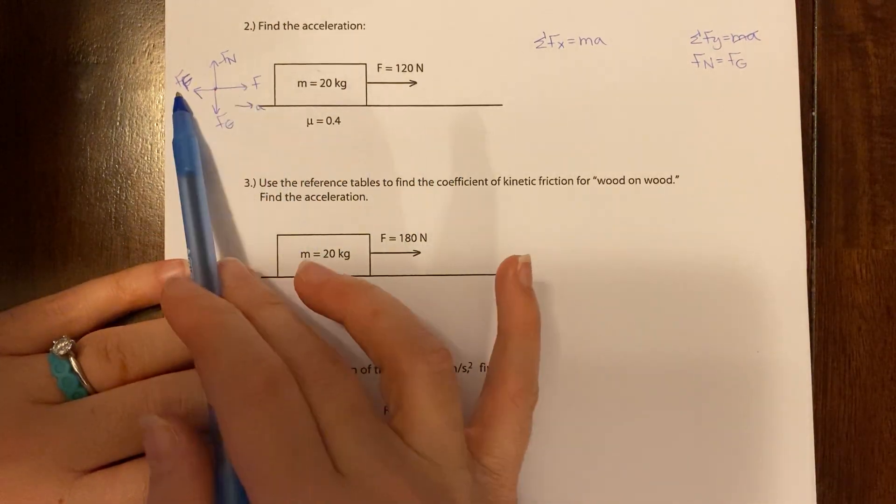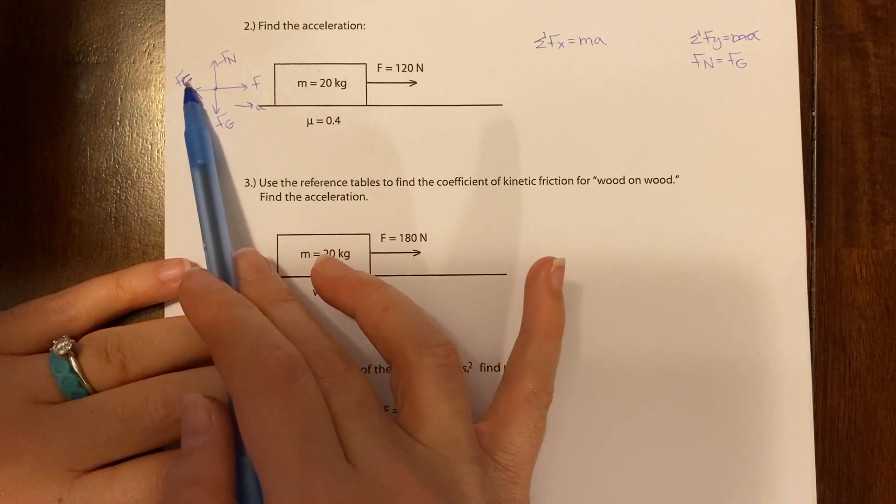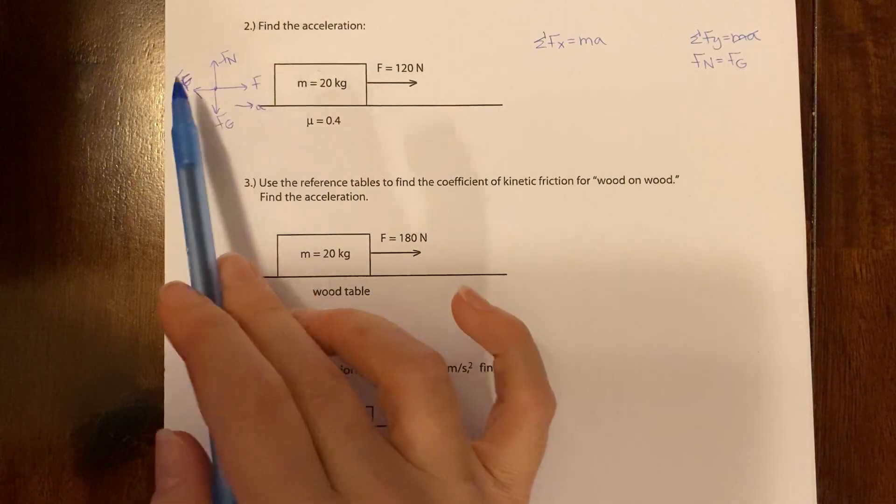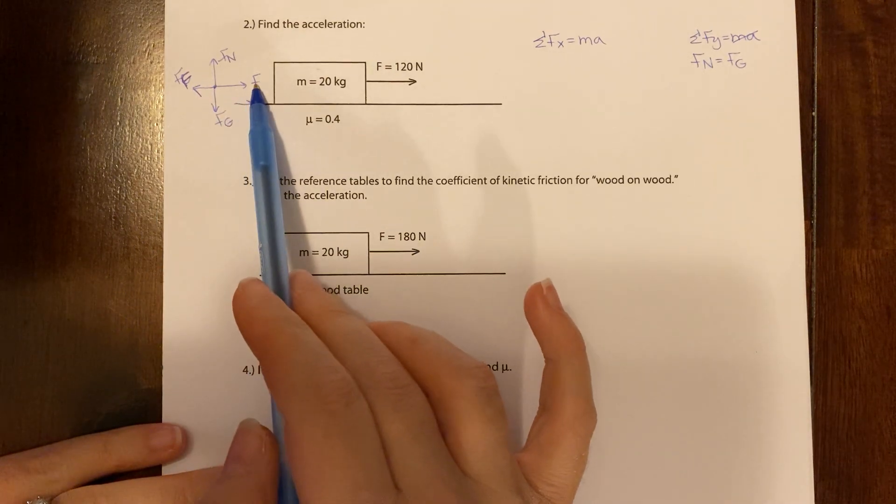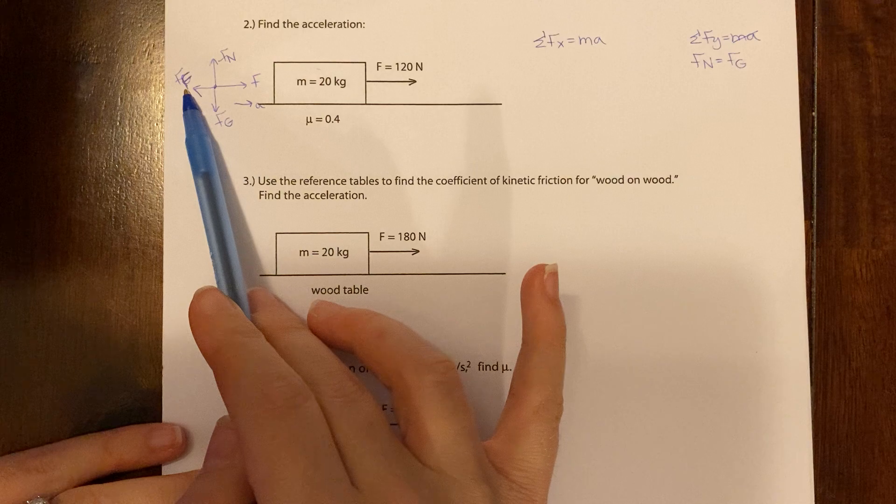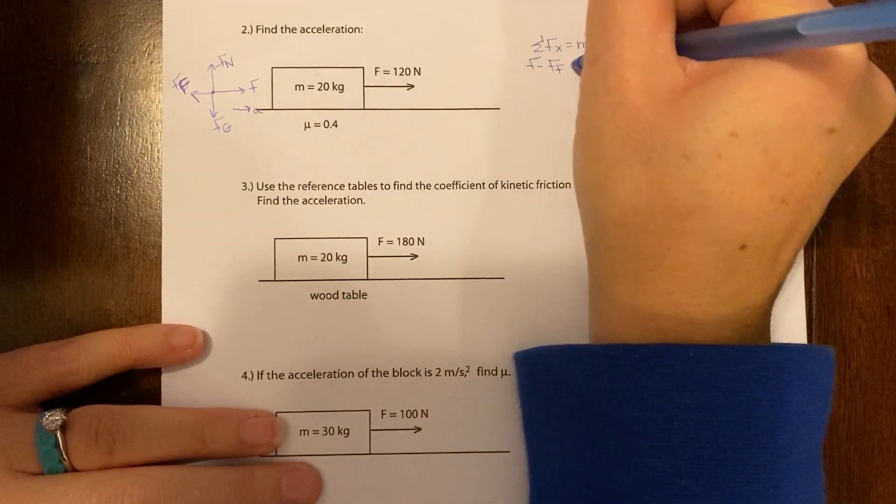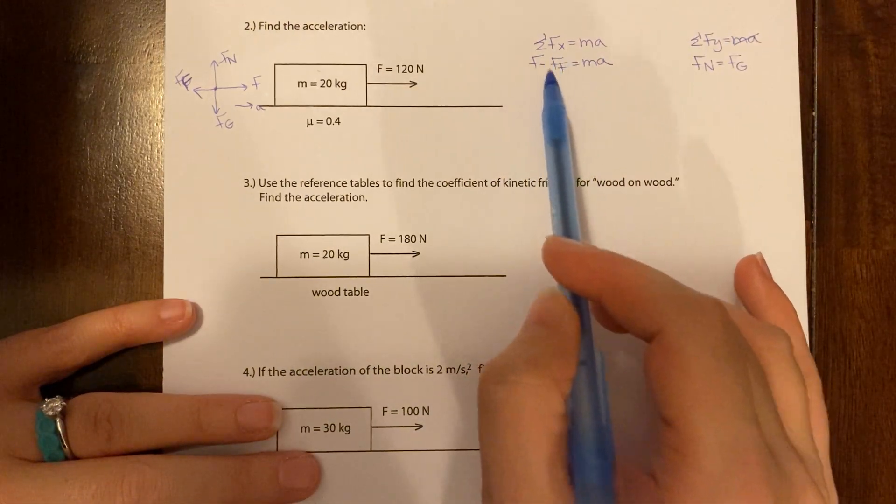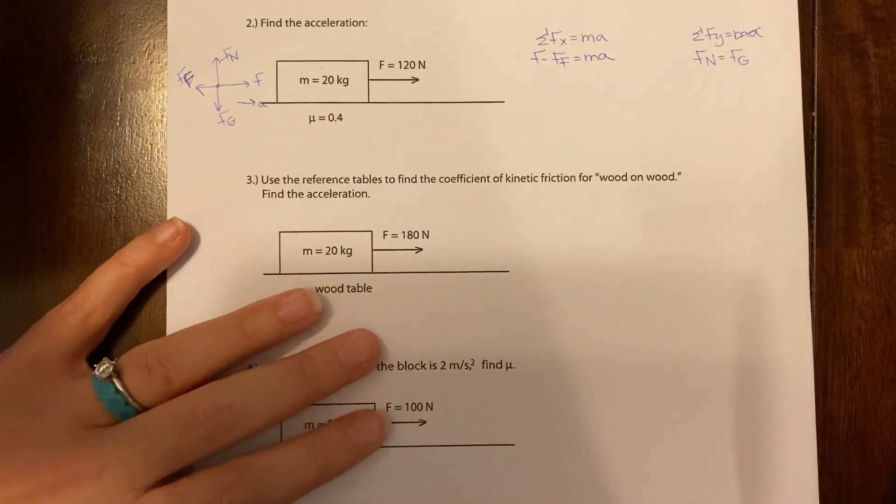Now in the x direction, we have two forces acting, the pulling force and the force of friction. Okay, this is accelerating in this direction. These are acting in opposite directions, so we must have to subtract. We're going to say f minus ff equals ma. And again, the reason why it's not ff minus f is because friction always acts opposite the direction of motion, so it's always going to be negative.